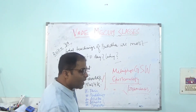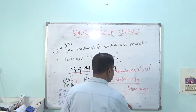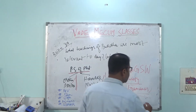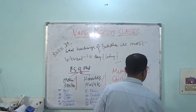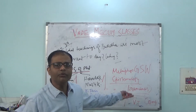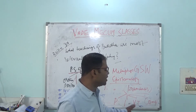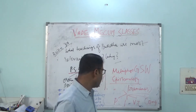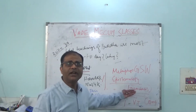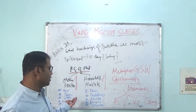Pramanas in Indian philosophy are basically four: perception, inference, verbal testimony, and comparison. Other philosophies have also included some more, but principally these are perception, inference, verbal testimony, and comparison. Different philosophies have different numbers of Pramanas which they include as valid sources of knowledge.